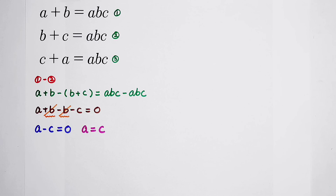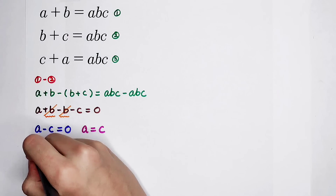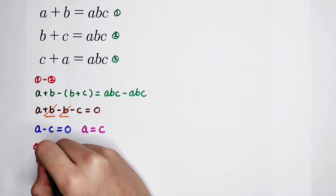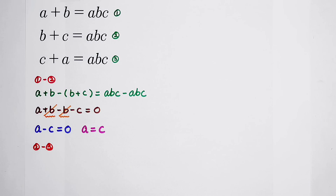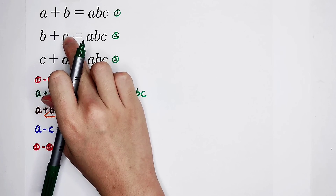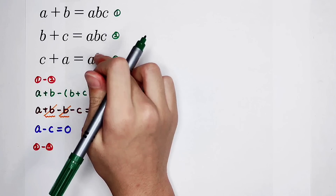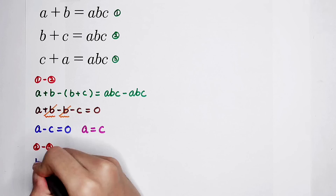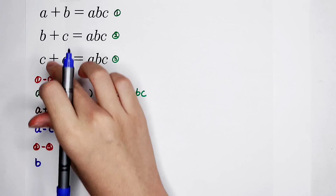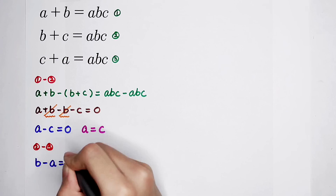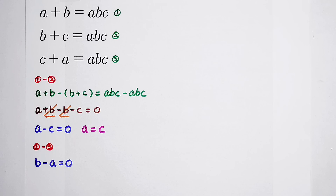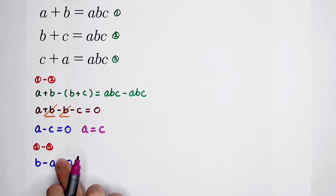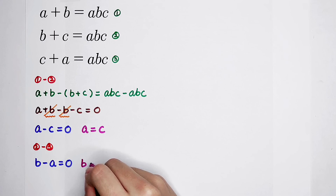It means A is equal to C. Now we get the subtraction of the second equation and the third equation. Then B plus C minus C minus A equals 0. The C terms cancel, giving B minus A equals 0, which means B has the same value as A.